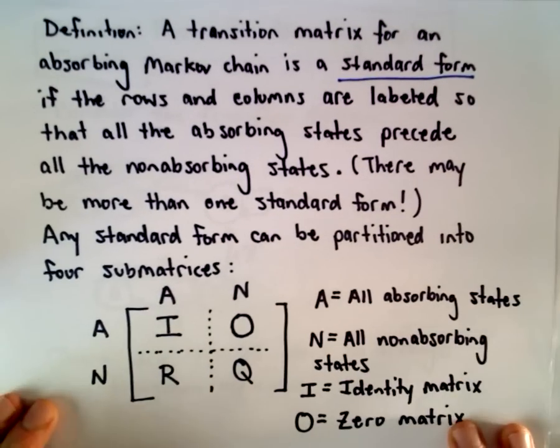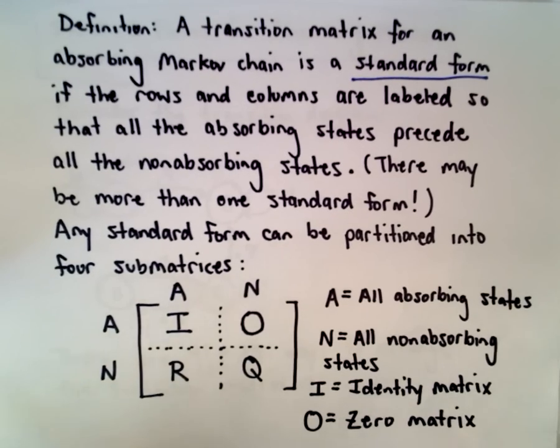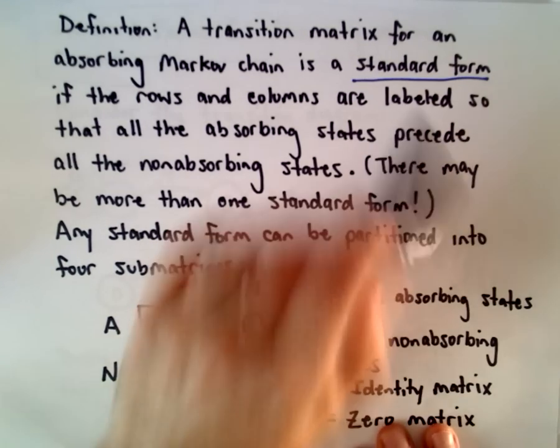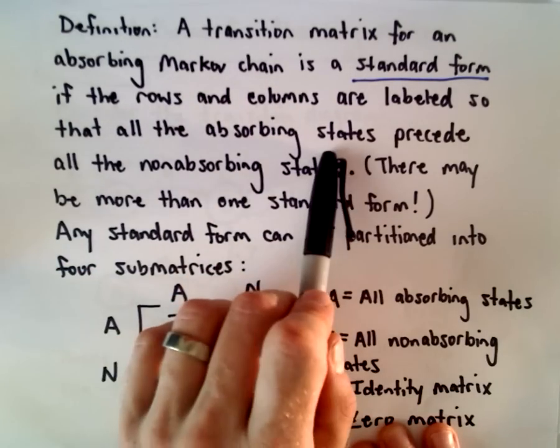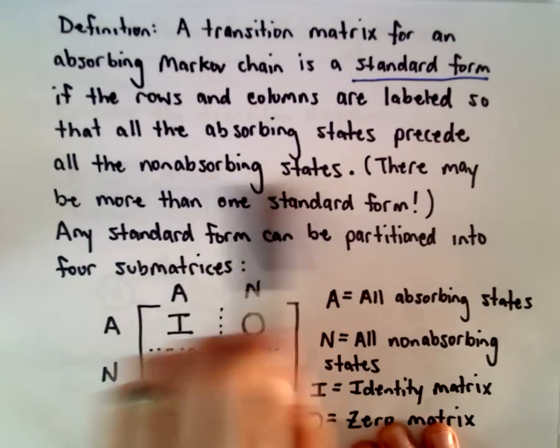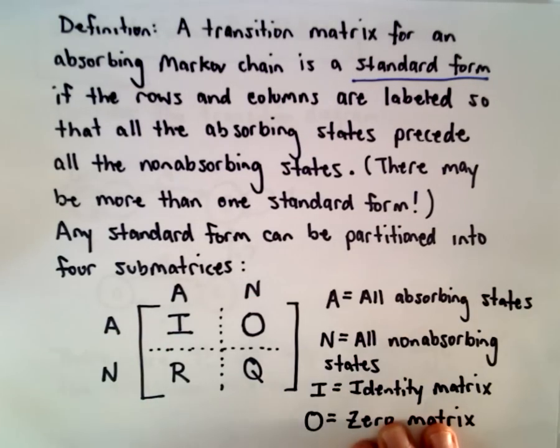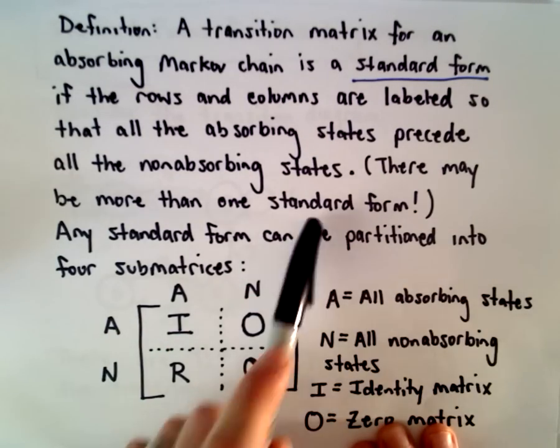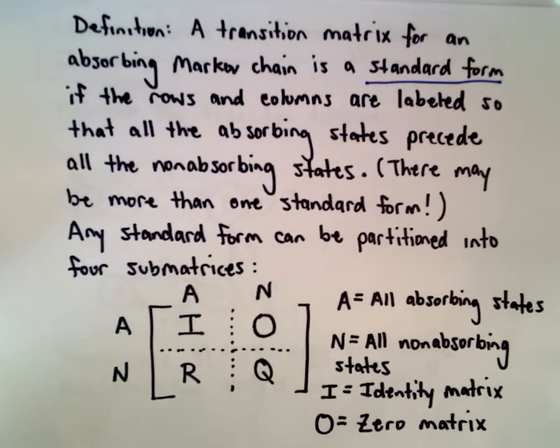So a transition matrix for an absorbing Markov chain is in standard form if the rows and columns are labeled so that all the absorbing states precede the non-absorbing states. So we're just going to write the absorbing states first. So obviously, there could easily be more than one standard form. So it's not unique necessarily.